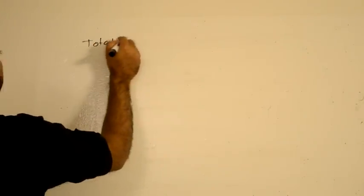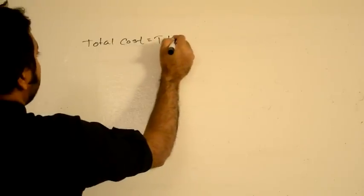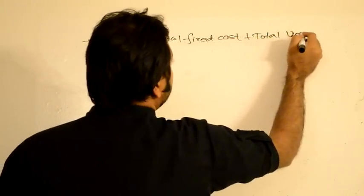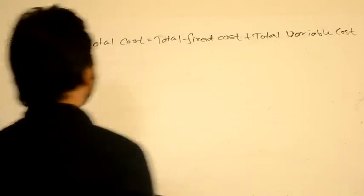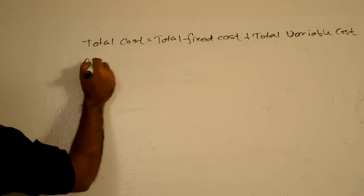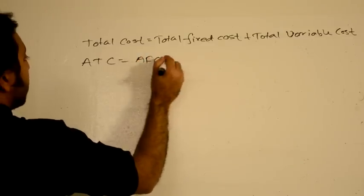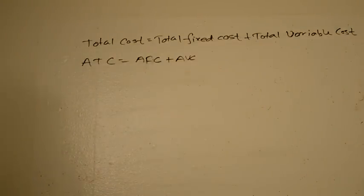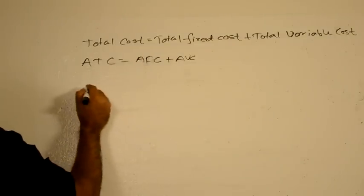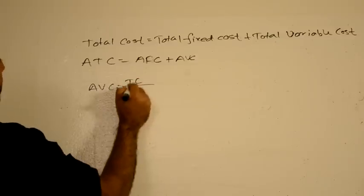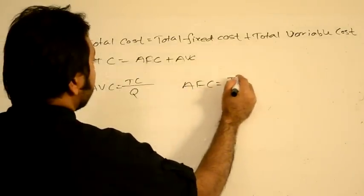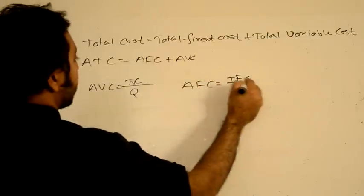Before we analyze that, I want to remind you that total cost equals total fixed cost plus total variable cost. This implies that average total cost (ATC) equals average fixed cost plus average variable cost. Average variable cost equals total variable cost divided by total amount of production, and average fixed cost equals total fixed cost divided by total amount of production.